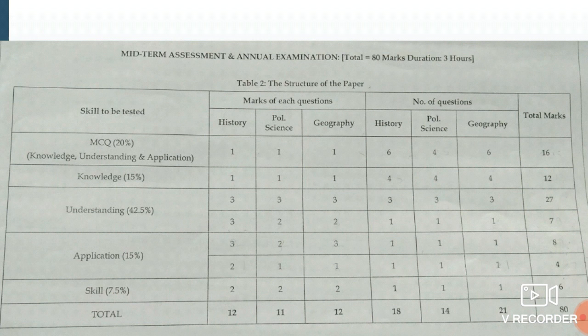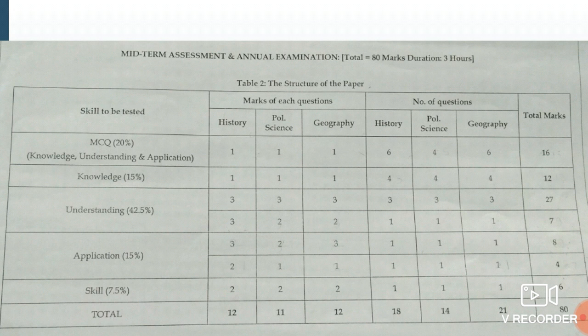The same pattern will be there for the term exam as well — same columns for MCQs, knowledge, understanding, application, and skill, subject-wise. For MCQs, six questions for history and geography, and four questions for politics. If you want to be perfect in Social Science subjects, you should read the whole lesson, then focus on MCQs questions and solve them.